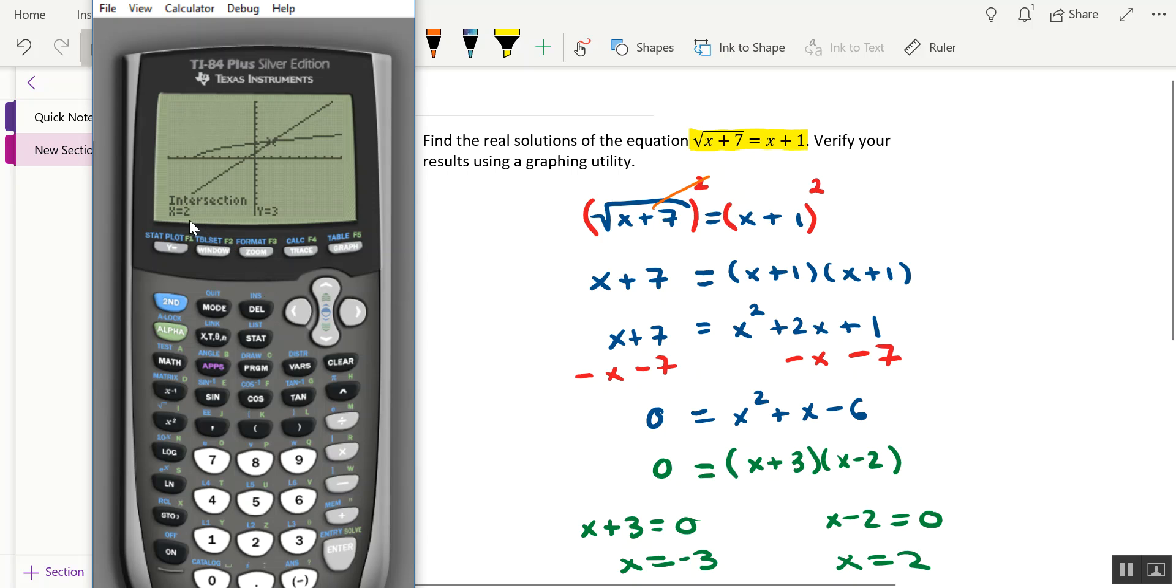And there we have it. It says the intersection is at x equals 2, y equals 3. As an ordered pair, that'd be 2 comma 3. Okay, in terms of the solution, you know, you could just write x equals 2.